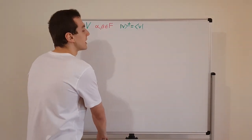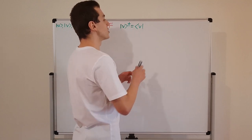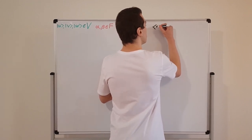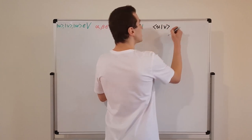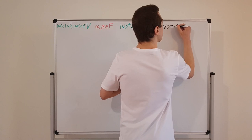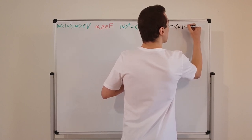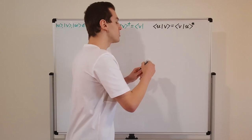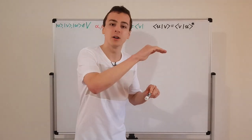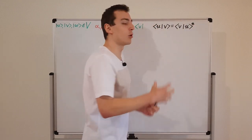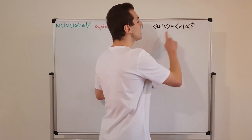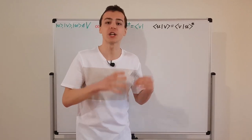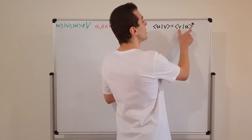Let's write down the first axiom, called conjugate symmetry. If I have the inner product of two vectors u and v, and I swap the order to write the inner product of v and u, this is almost the same but we have to take the complex conjugate, denoted by a little star. It would be symmetric if these were equal, but instead it's conjugate symmetric — we have to take the complex conjugate when we swap the order.